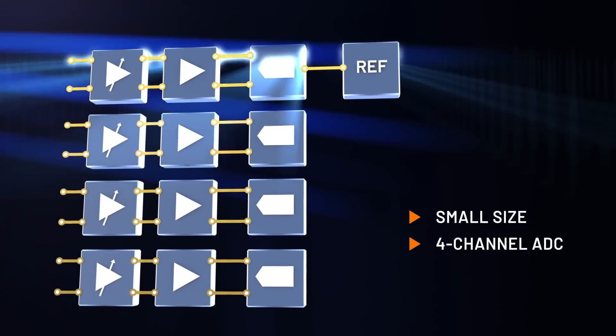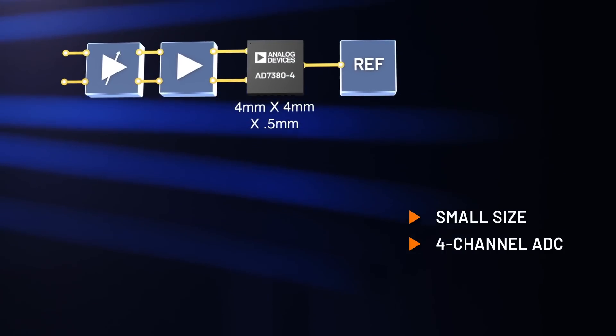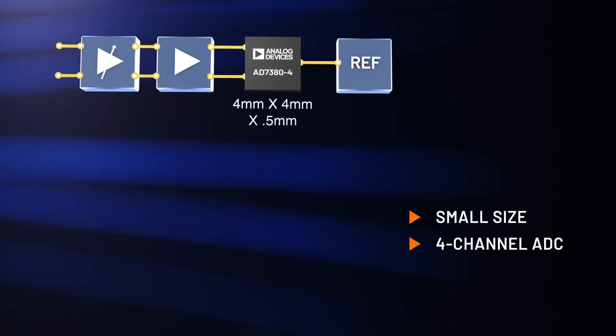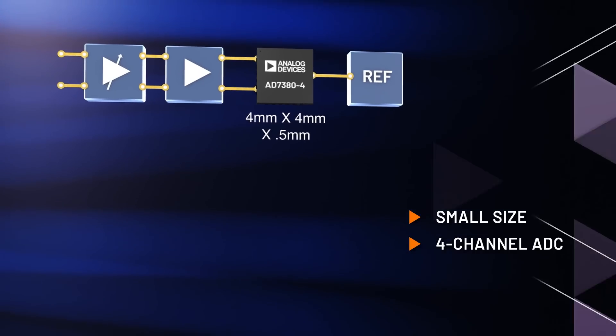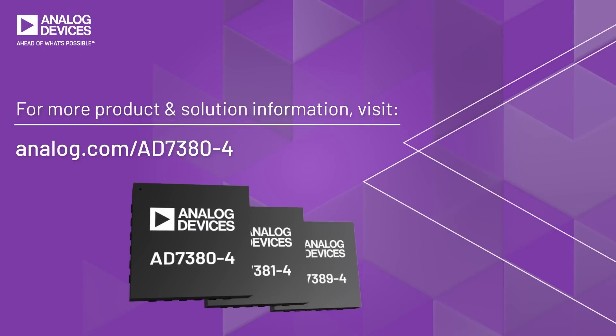Form factor is reduced by enhancing signal chain channel density of multi-channel DAC systems, allowing miniaturization of customer end solutions. Higher precision, higher resolution, and channel density can all be realized with the AD7380-4 family of ADCs.